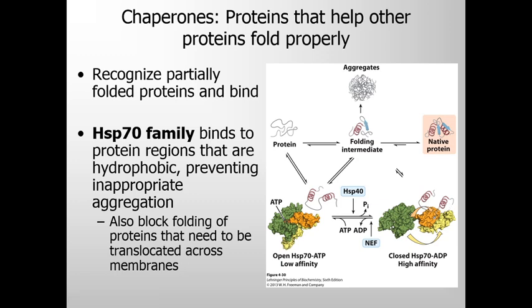Some proteins undergo assisted folding. Chaperones are the proteins that help other proteins fold properly. Chaperones recognize partially folded proteins and bind to these proteins, thereby preventing complete unfolding. There are two major families of chaperones that are very well studied: the first one is HSP-70, or heat shock protein 70 family, and the other one is chaperonins.